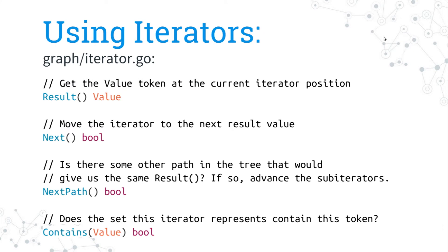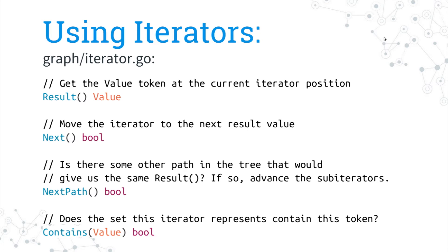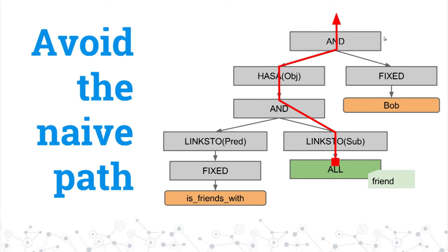How is the iterator interface used? Result is just, what am I pointing at — give me the result. Next advances the set. Next path is a little bit more curious, because while next advances the set, there may be multiple ways to get to a target — multiple paths that get me to this element of my set. Contains is just, does this value exist within this set? One thing that's really tricky is we want to avoid the naive path. Because the naive path is to ask for all the people in the world, find all their friends, and just check to see if they're Bob — equivalent of going around the audience saying, are you friends with Bob? Are you friends with Bob? You'd get a lot of no's.